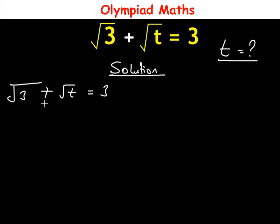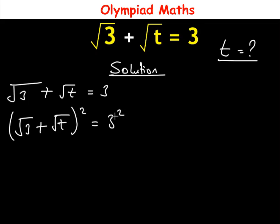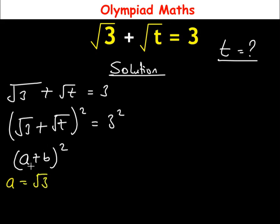Now, looking at this equation, since we have a square root, we are going to eliminate the square root by squaring both sides of the equation. So that will become (√3 + √t)² = 3². And from here, this resembles the form (a + b)², where the value of a is equal to √3.